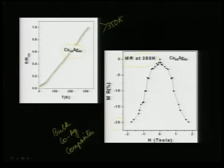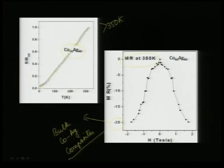This is new because there are no reports of cobalt-silver alloys showing such high values. It is possible from this work that one can prepare cobalt-silver films by sputtering or other methods and look at MR close to the Tc.